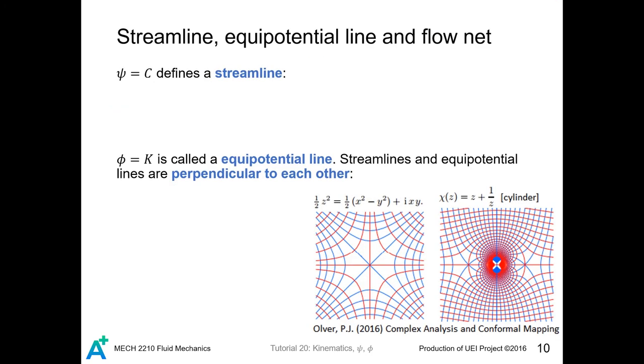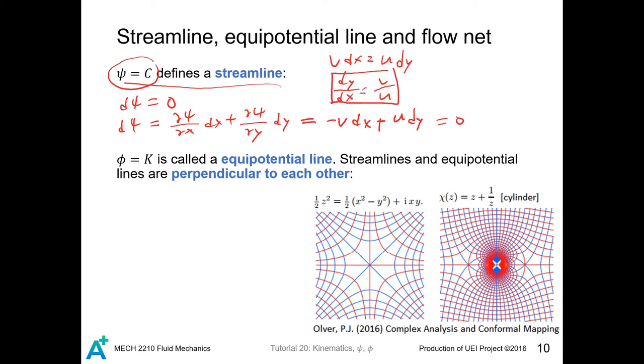Now we start to discuss what is so useful and beautiful about the two functions psi and phi. First, they can be used to visualize a flow. You may wonder why the stream function is called the stream function. It is because the stream function is constant along streamlines. So let's prove this statement. For psi equals to a constant, that means d psi equals zero. And d psi, as you recall from multivariable calculus... and from the equation in previous slide, this is negative v, and this is u, so this is zero, and we get dy/dx = v/u, which is the streamline equation in Chapter 3.